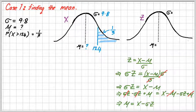So what am I left with? I'm left with the mean equals x minus standard deviation times z. There you go. If you remember that formula, you're going to be good to go to find the mean.